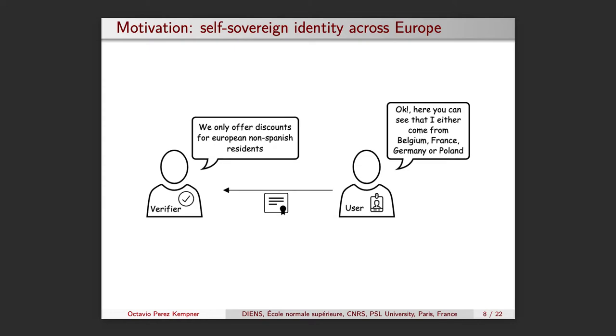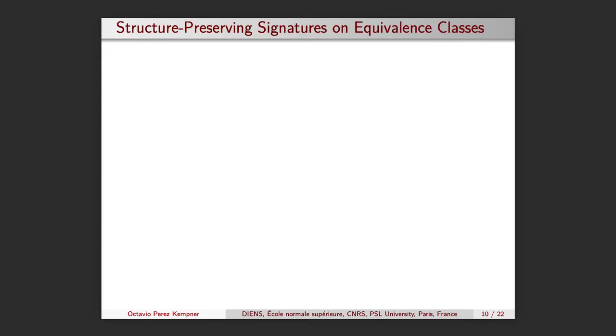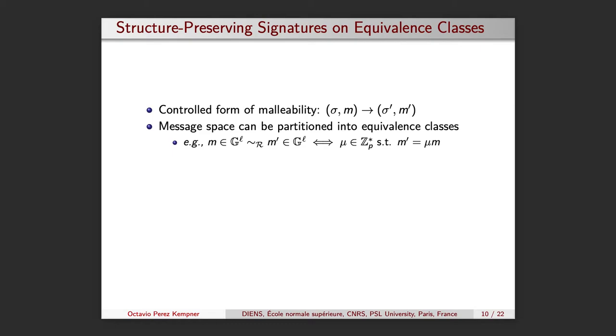In order to see how one can build a credential system allowing this functionality, I will now introduce the concept of structure-preserving signatures on equivalent classes, which will be at the core of our signer-hiding feature. The main idea is that they allowed a controlled form of malleability, where one can update a signature to a new message that is related to the original one. This controlled form of malleability is possible if the message space can be partitioned into equivalent classes. If we consider a message space of vectors of length L, the following relation partitions the message space into equivalent classes.